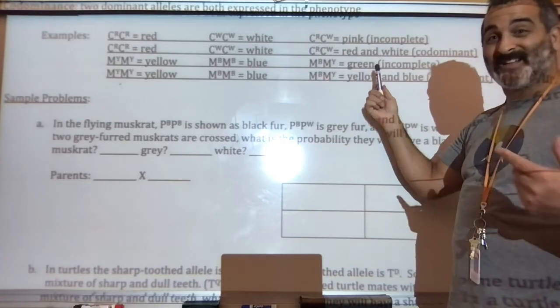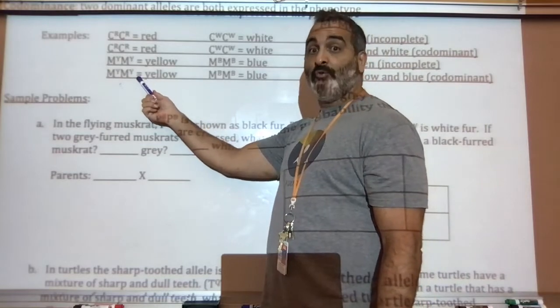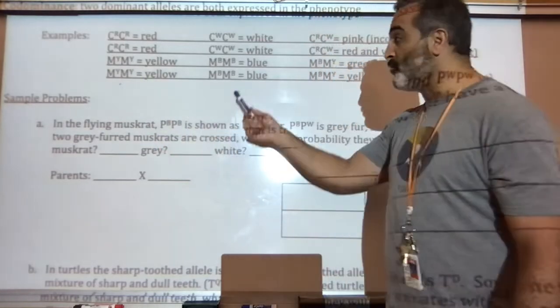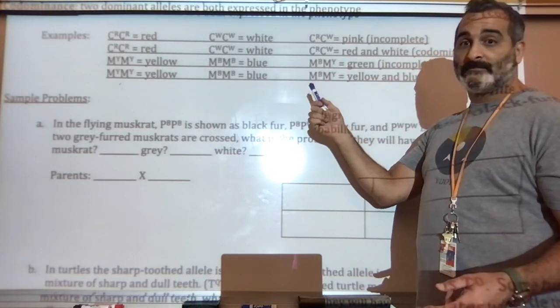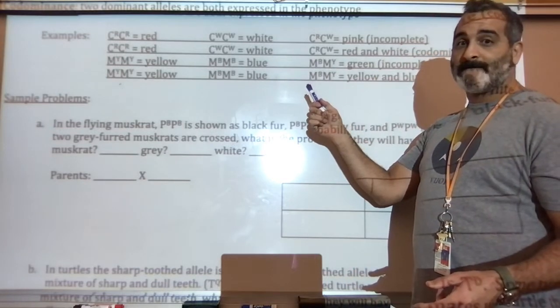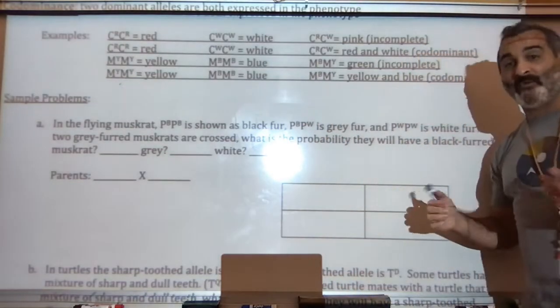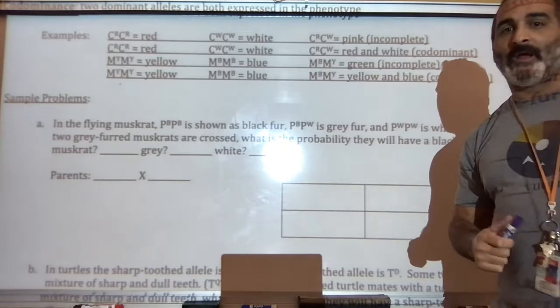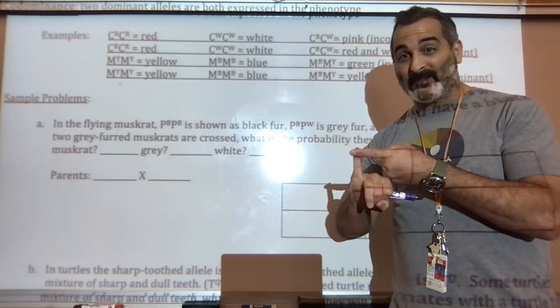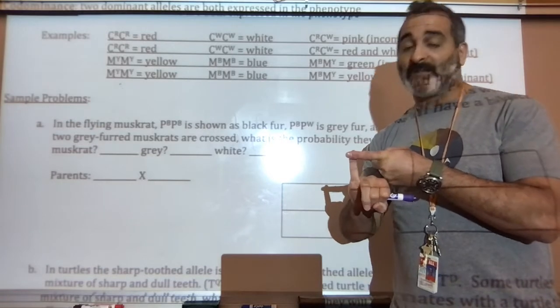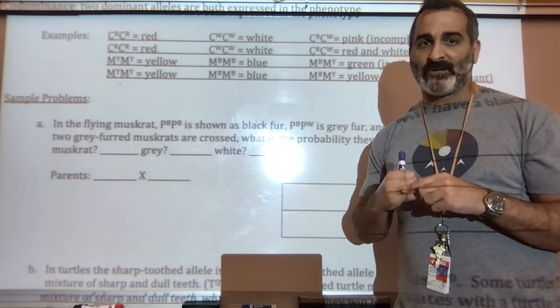Yellow and blue make green. That's the intermediate. Some birds have two Y's is yellow in that bird. Two B's would be blue. And some birds have a mixture of blue and yellow feathers, so that would be codominant. So there's codominant, and there's incomplete dominance. Incomplete dominance finds a medium or an intermediate. Codominant shows you both of those particular characteristics.